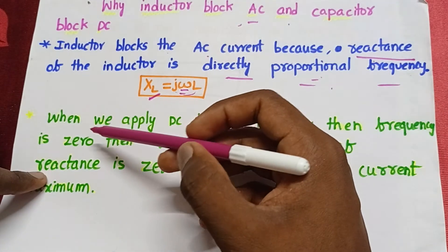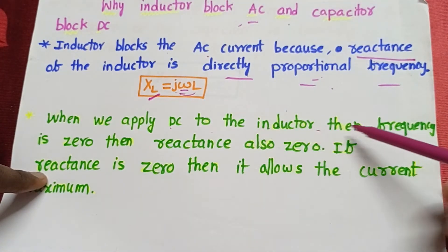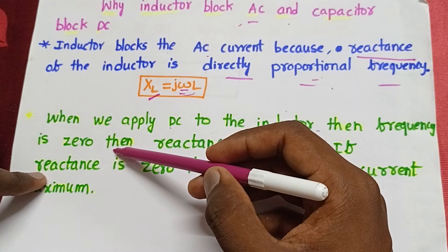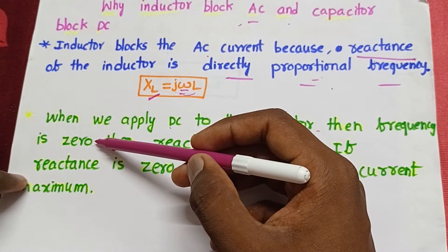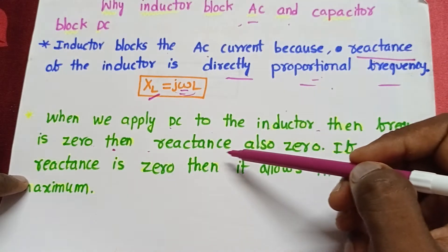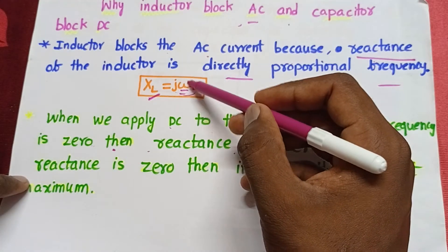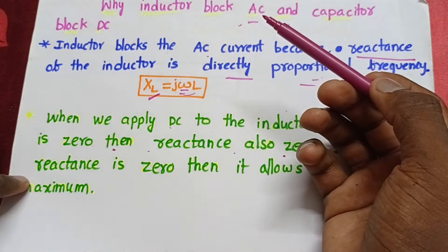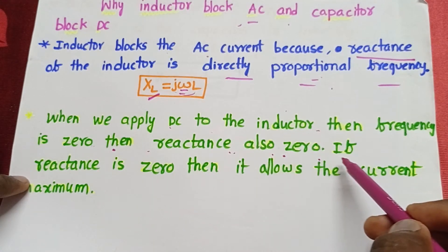When we apply DC to the inductor, the frequency is zero. We know that in DC current, frequency is zero. Then reactance is also zero. If the frequency — that is omega — is zero, then XL is also zero, and reactance is also zero.